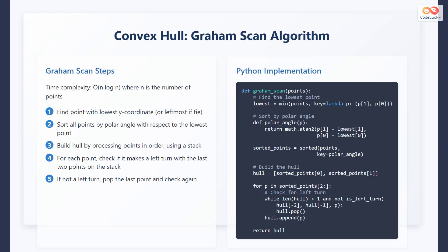Step 4, for each point, check if it makes a left turn with the last two points on the stack. Step 5, if it is not a left turn, pop the last point and check again.